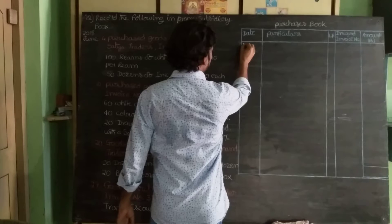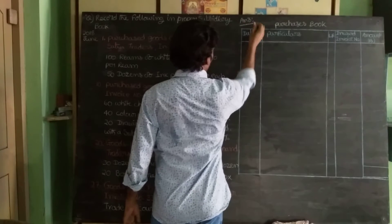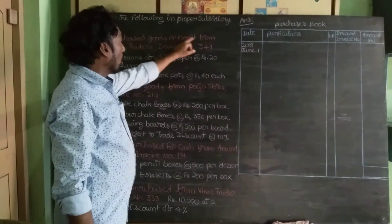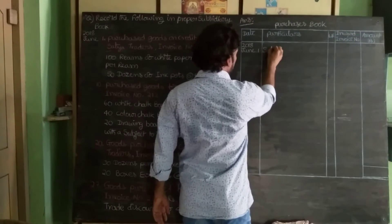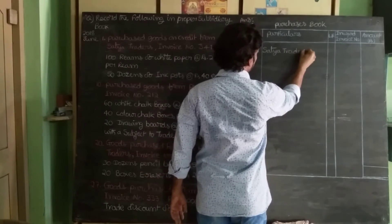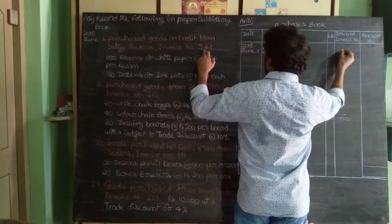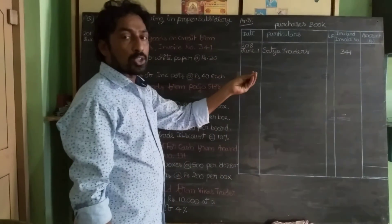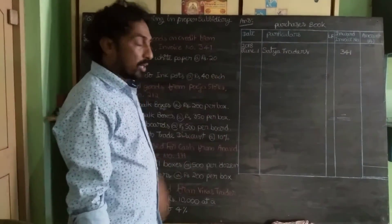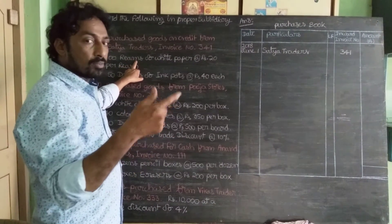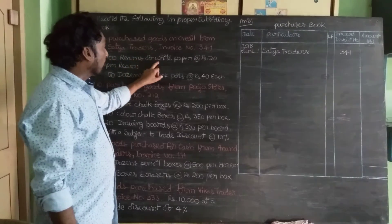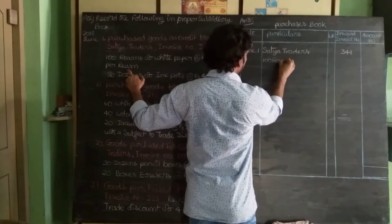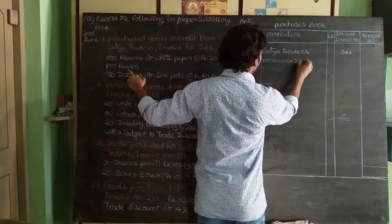First entry: 2018 June 1st — purchased goods on credit from Satya Traders. Write 'Satya Traders' in the particulars column. Invoice number 341 is written in the inward invoice number column — simply known as the bill number. 100 reams of white paper at the rate of rupees 20 per ream. So 100 reams × ₹20 = ₹2,000.